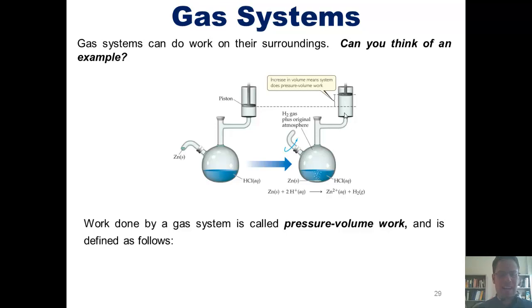Now work that's done in a gas system is called pressure-volume work and is defined mathematically as W, in this case pressure-volume work, equals negative P times delta V, where P equals pressure and delta V equals V final minus V initial.